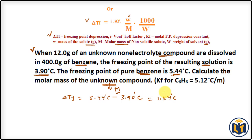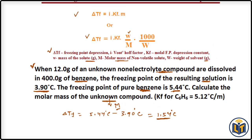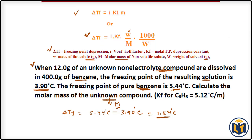So when the non-electrolyte solute is added to the solvent, the freezing point of the solvent decreases by 1.54°C. Now we can use the formula to calculate the molar mass of the compound.